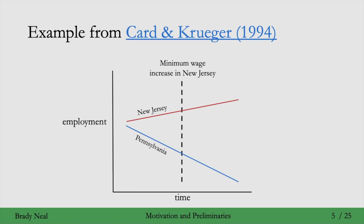Here's a popular example from the Card and Krueger 1994 paper. They wanted to study the causal effect of increasing minimum wage on employment. The treatment group here was New Jersey, which was going to have a new minimum wage increase go into effect at a specific point in time, marked with a dotted line. And then the control group was the neighboring state, Pennsylvania, who wasn't going to have any minimum wage increase.